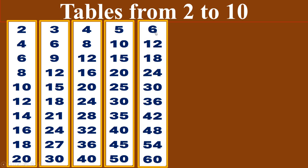Six times table. Six ones are six. Six twos are twelve. Six threes are eighteen. Six fours are twenty-four. Six fives are thirty. Six sixes are thirty-six. Six sevens are forty-two. Six eights are forty-eight. Six nines are fifty-four. Six tens are sixty.